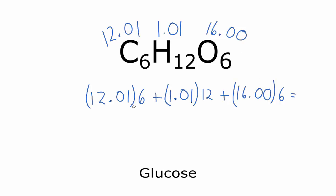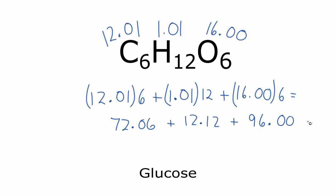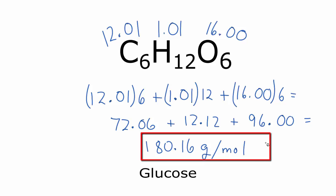So let's add up each of these and then add them together. When I add up these three numbers, that's going to give me 180.16, and now I need my units — grams per mole. So one mole of glucose equals 180.16 grams.